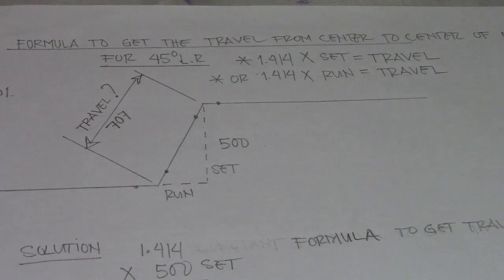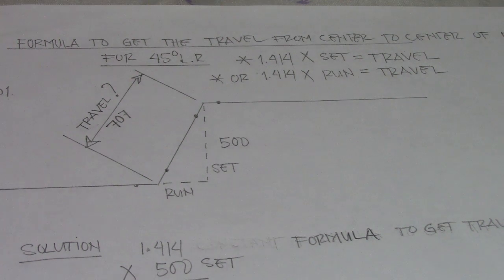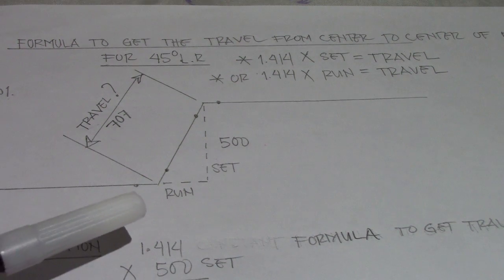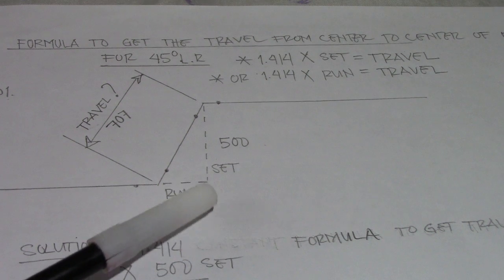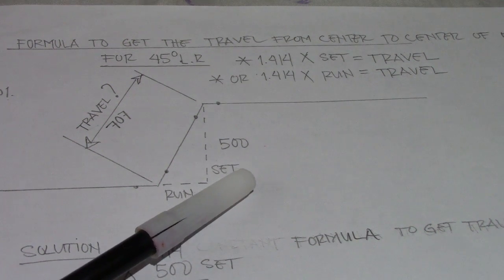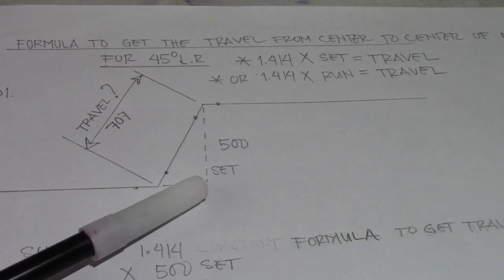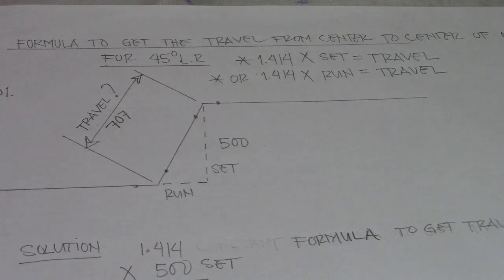Or we have 1.414 multiply by run equals travel. This is our set and this is our run. We have 500 here, and we also have automatically our run is 500 as well.